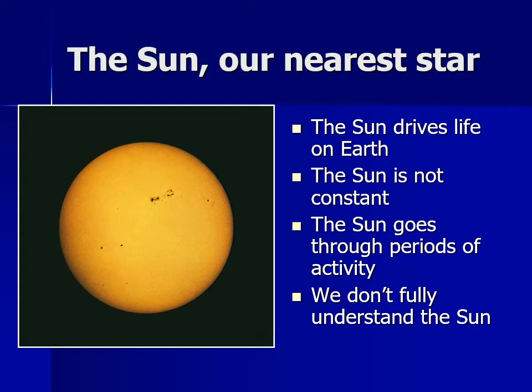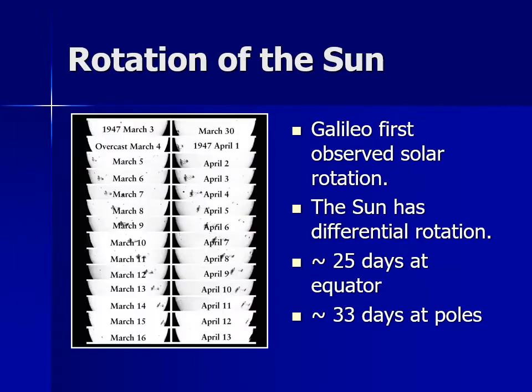We do know that there are other G2-type main sequence stars, so they'll be very similar to the sun. They occasionally go through periods in which they have radical changes. The question is, could the sun do that? And if it did, what would that do to Earth? So we'll talk about some of that solar activity later on as well.